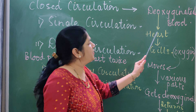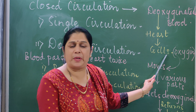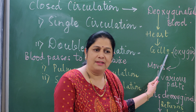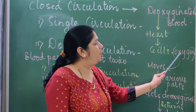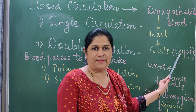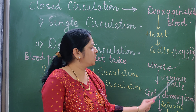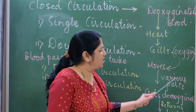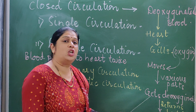In vertebrates, like lower vertebrates and higher vertebrates, in lower vertebrates like fish, the circulation is single circulation. The blood flows only once. Such a circulatory system shows single circulation. As in the course of evolution, we study this on the basis of the structure of the heart.